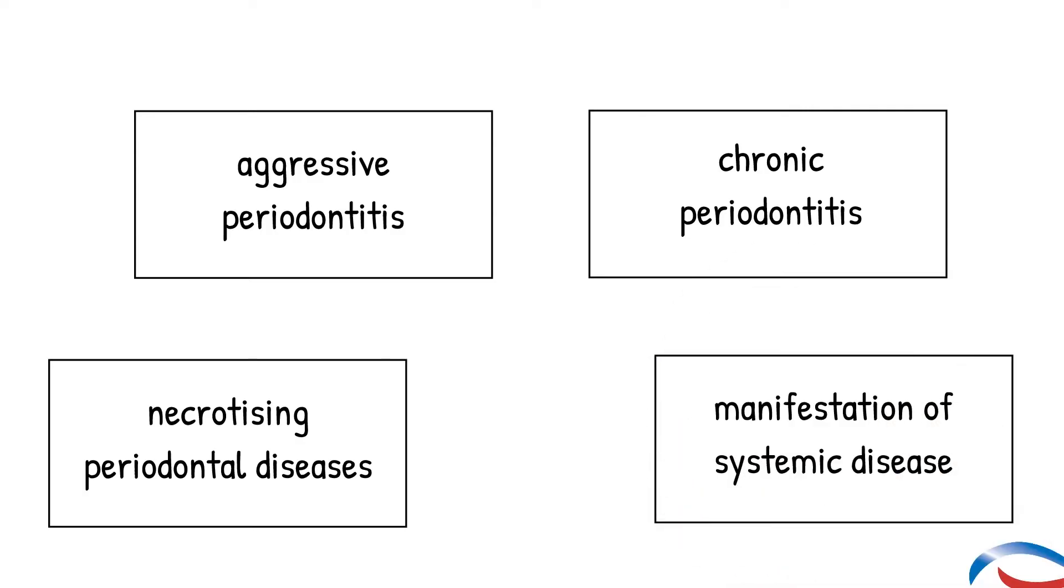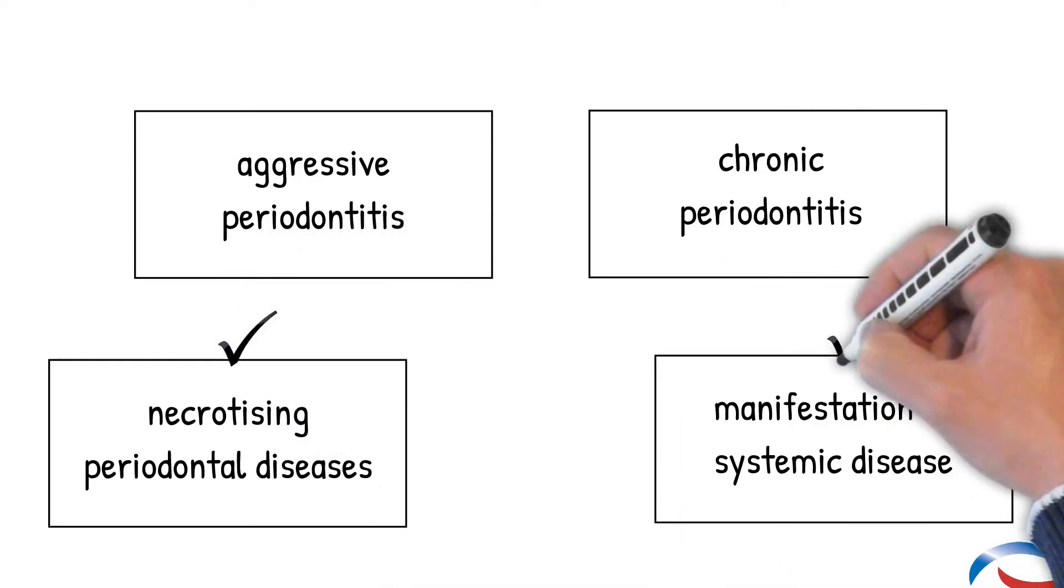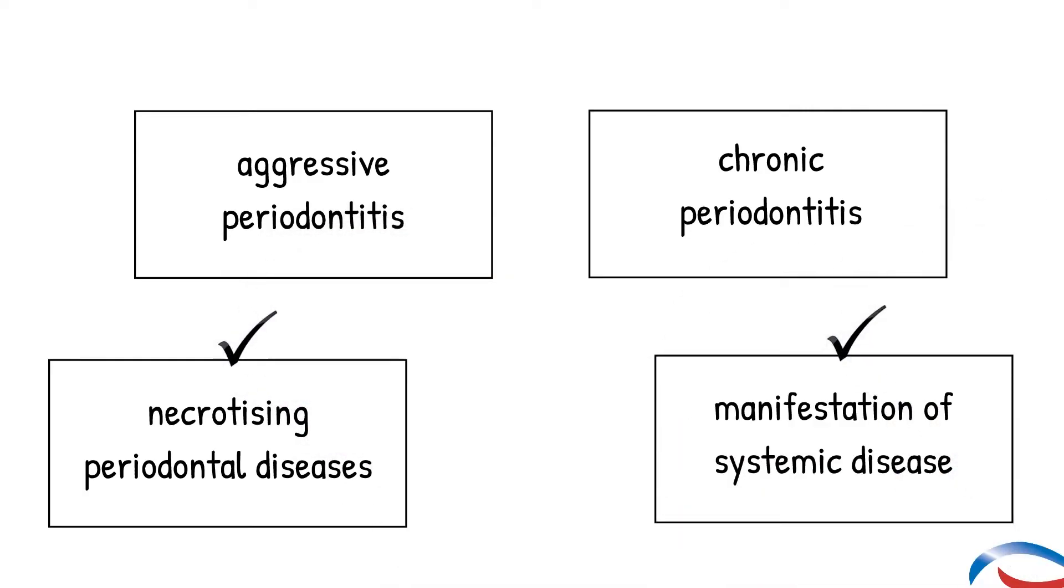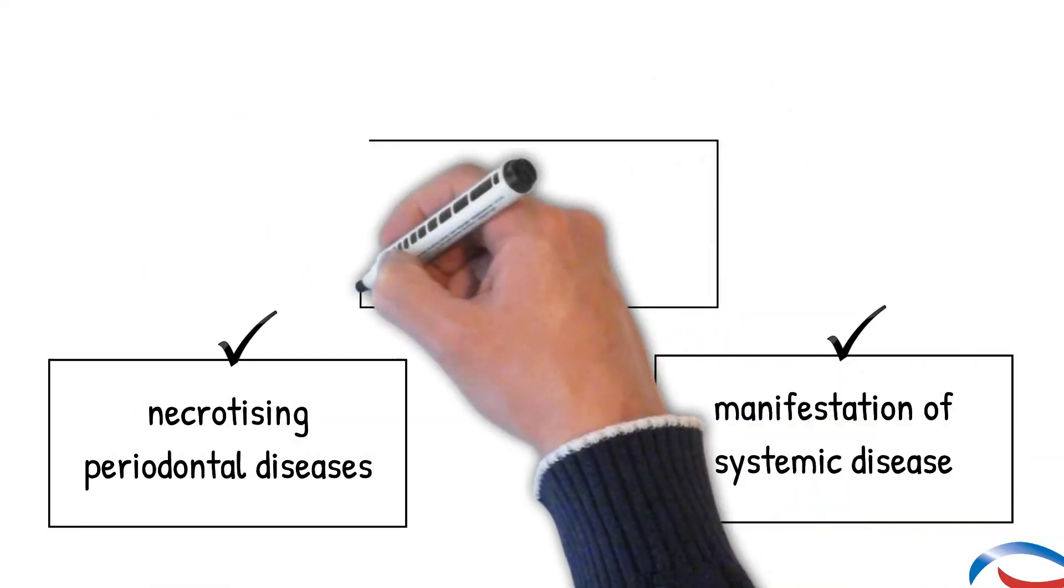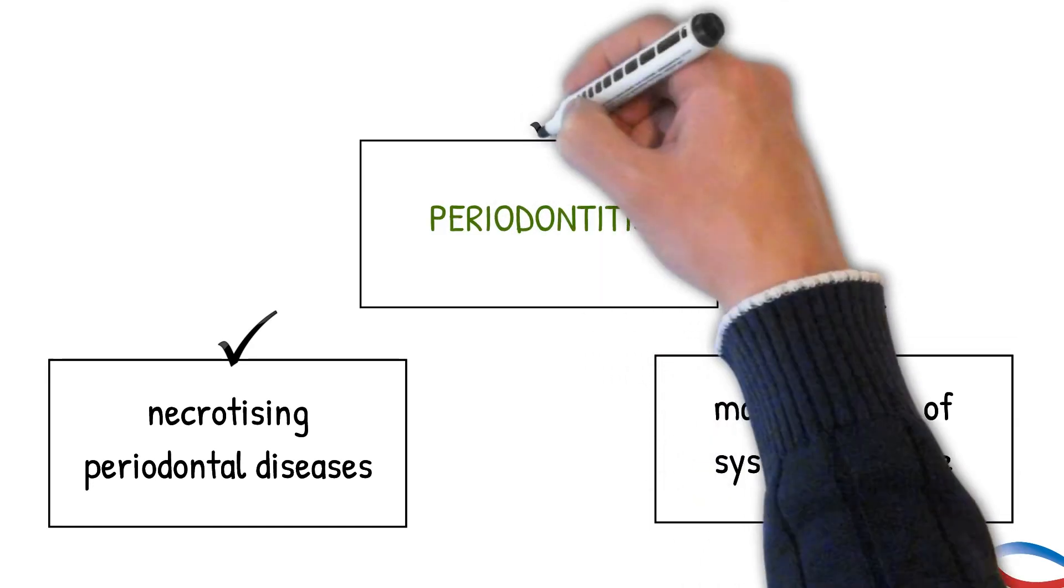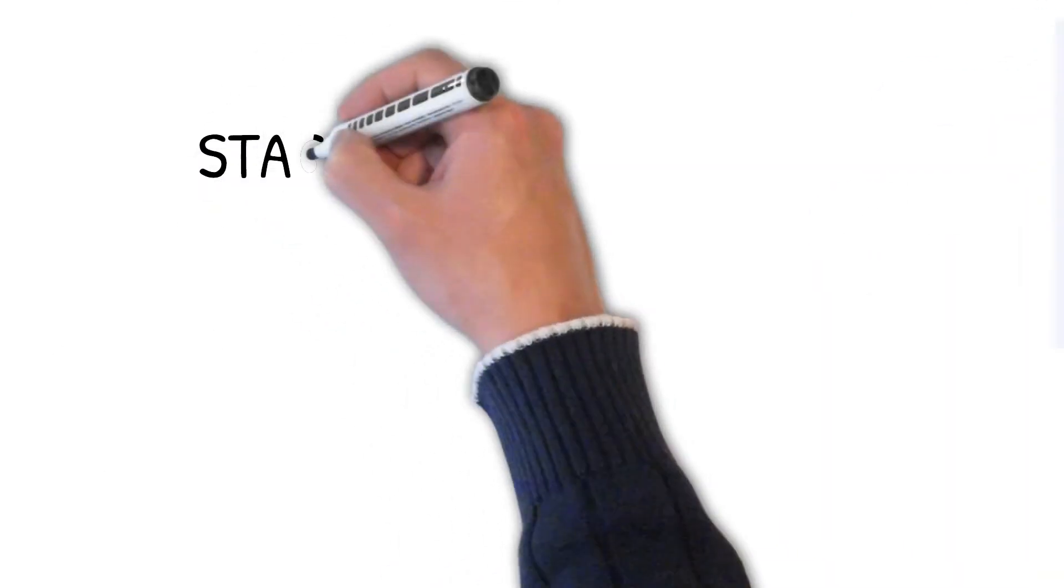Necrotizing diseases and periodontal diseases as a manifestation of systemic disease remain the same. However, aggressive and chronic periodontitis have been replaced with a single category called periodontitis. This new category has two key components: staging and grading. Staging represents the severity of the disease.